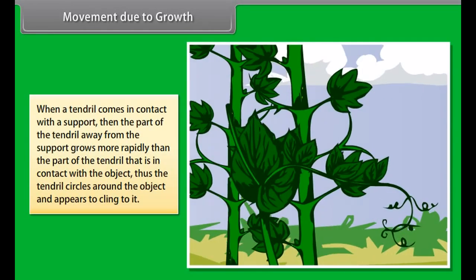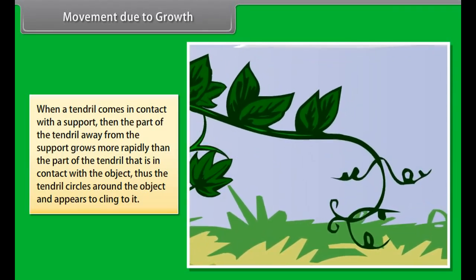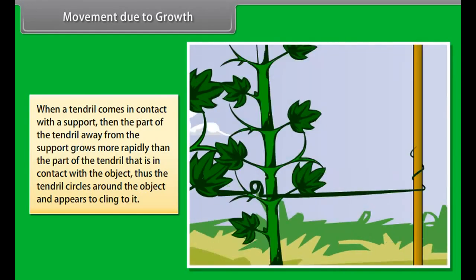Movement due to growth: When a tendril comes in contact with the support, then the part of the tendril away from the support grows more rapidly than the part of the tendril that is in contact with the object. Thus, the tendril circles around the object and appears to cling to it.